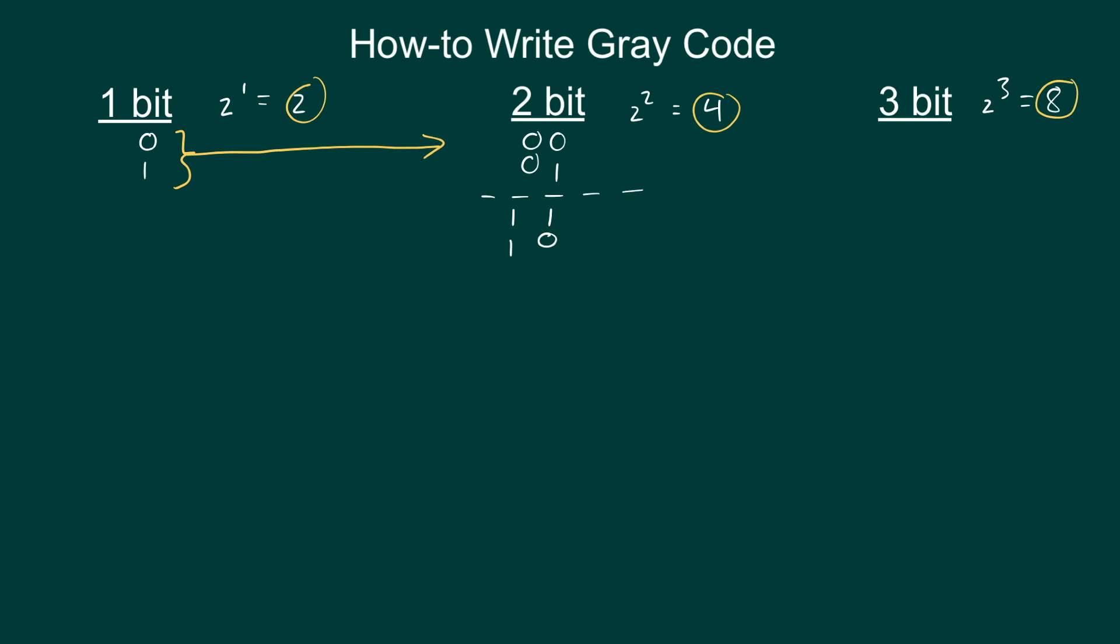So now I have successfully written 2-bit Gray code and I want to move on to the 3-bit Gray code. So again I'm going to borrow the work that I've already done to make the process easier. And I'm just going to write them over here in the 3-bit column. And the first thing I notice is that I have four terms or four codes and I need eight.